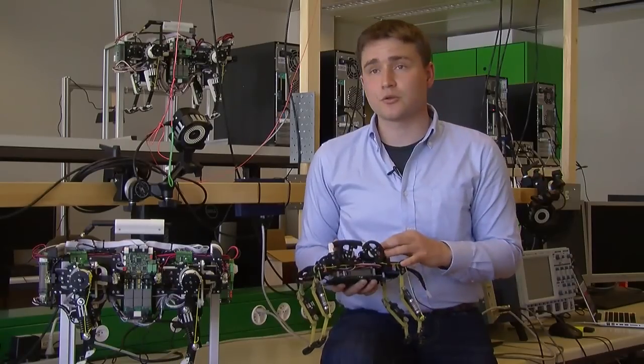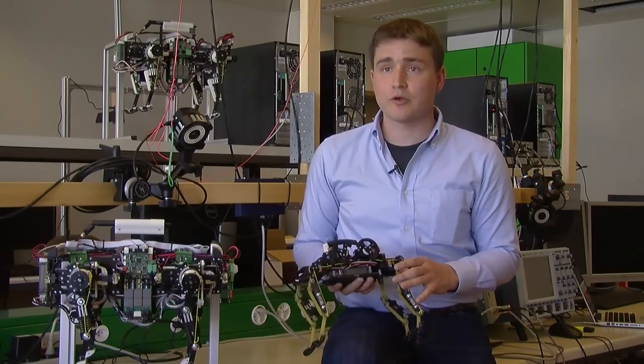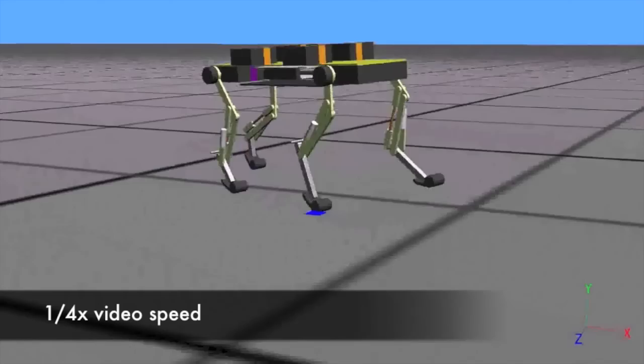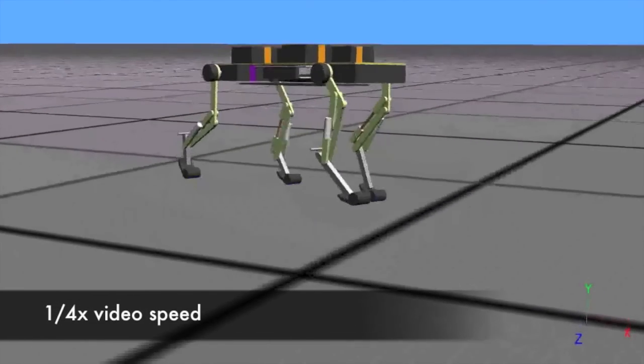The sum of morphology and control enables us to run this robot very fast, up to 1.4 meters per second. This is about seven body lengths per second. Besides this very fast speed, it's also very robust.